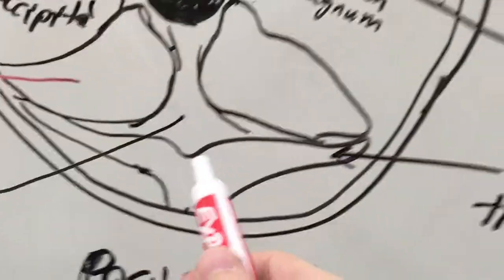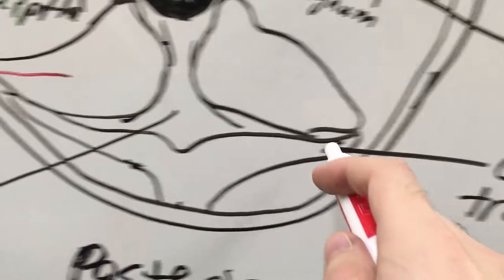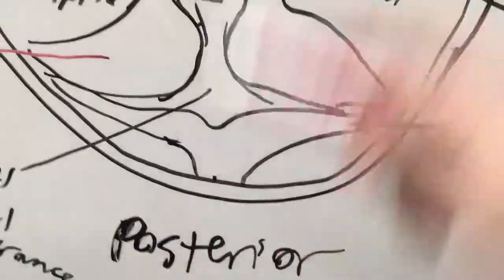Then here we have the internal occipital protuberance. Here we have the groove for the transverse sinus. And that's the end.